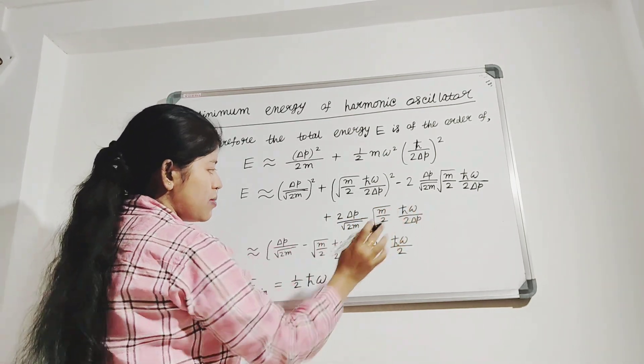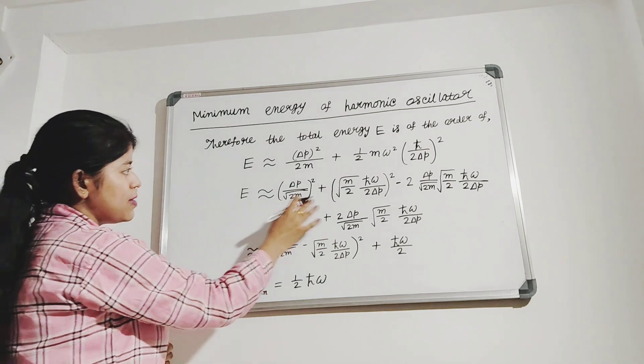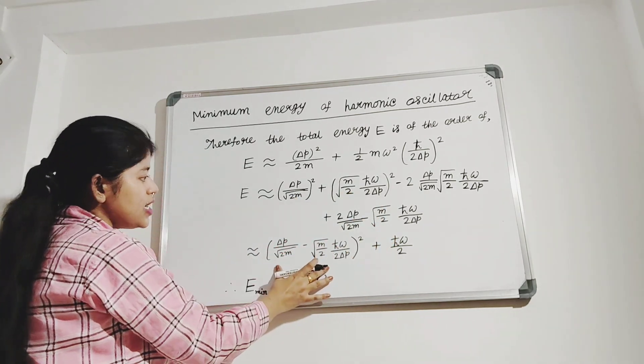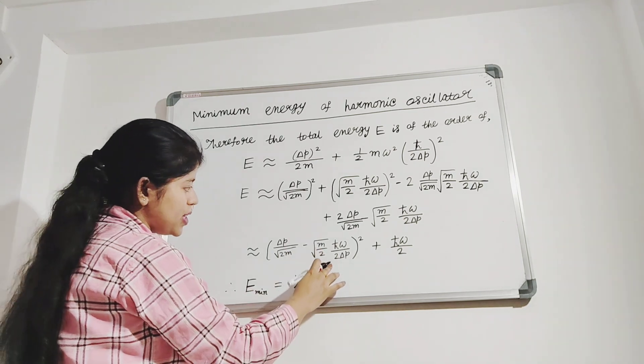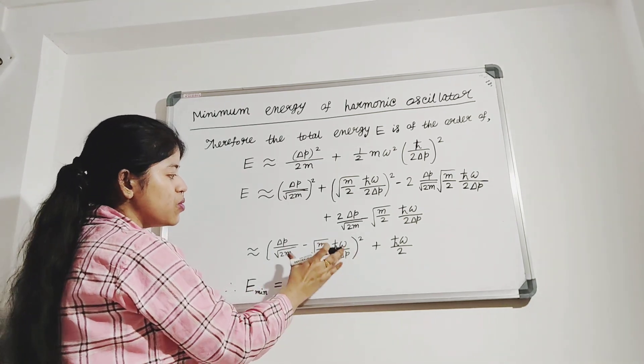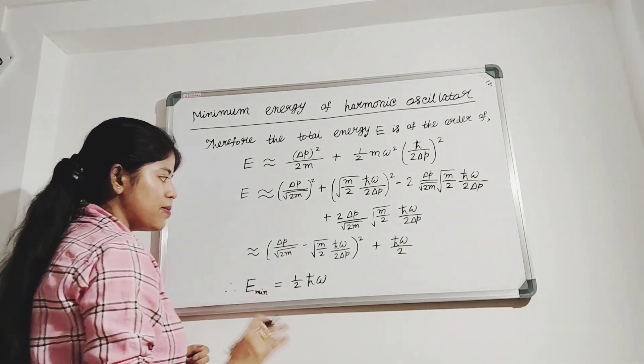Or we can simplify this expression in this way, and E equals delta p by root over 2m minus root over m by 2 h-cut omega by 2 delta p squared plus h-cut omega by 2.